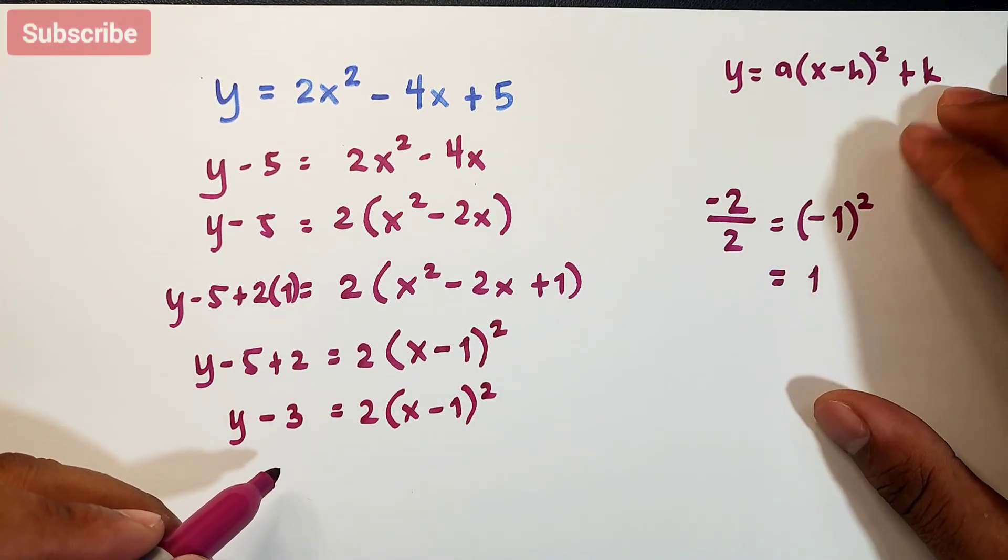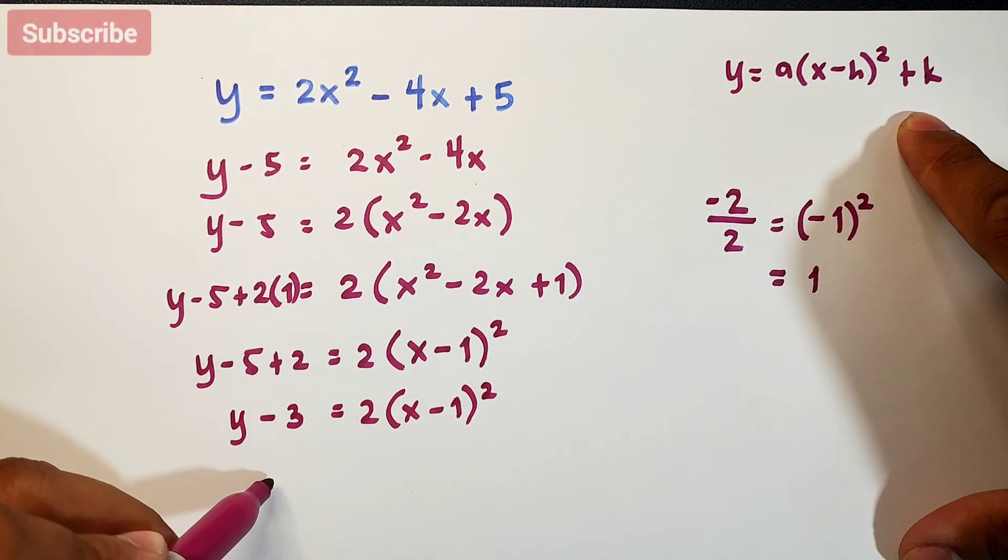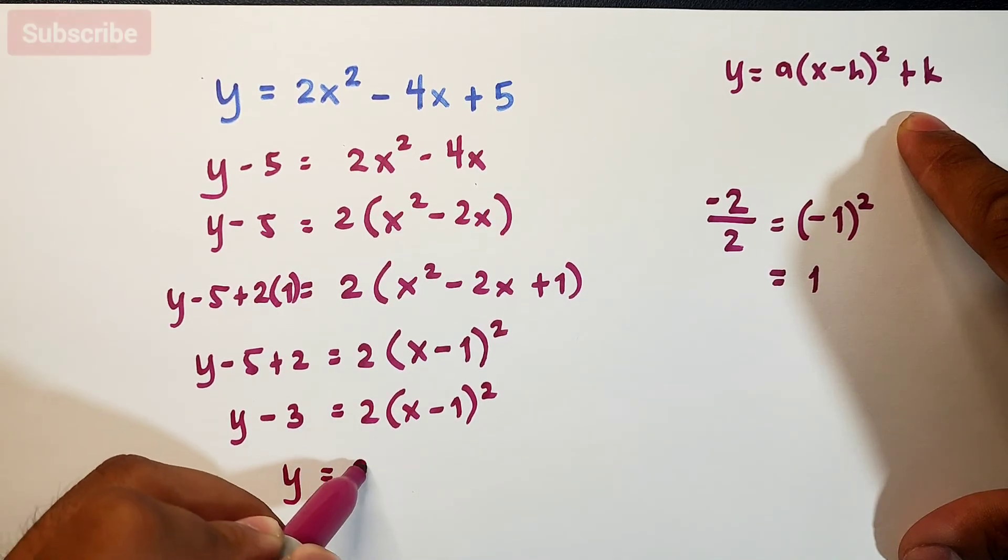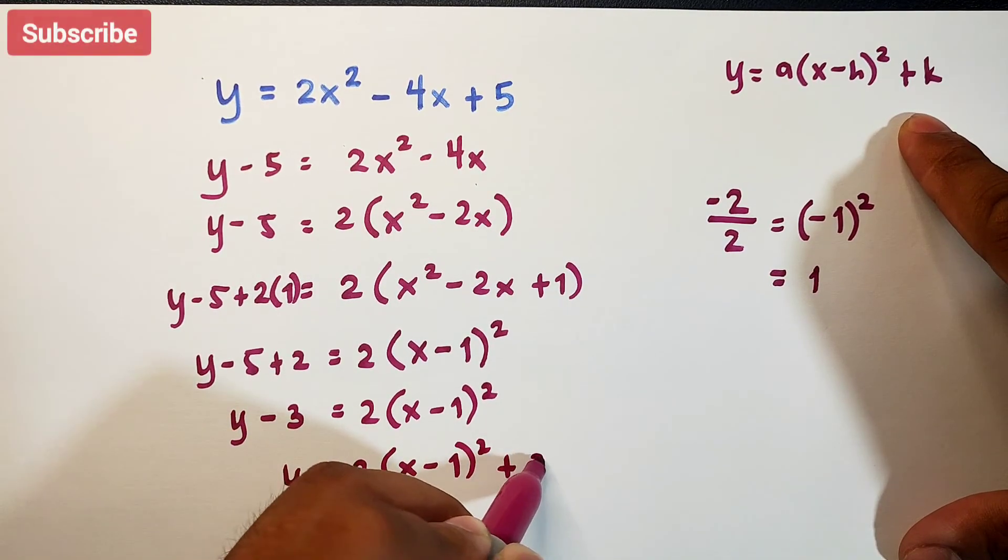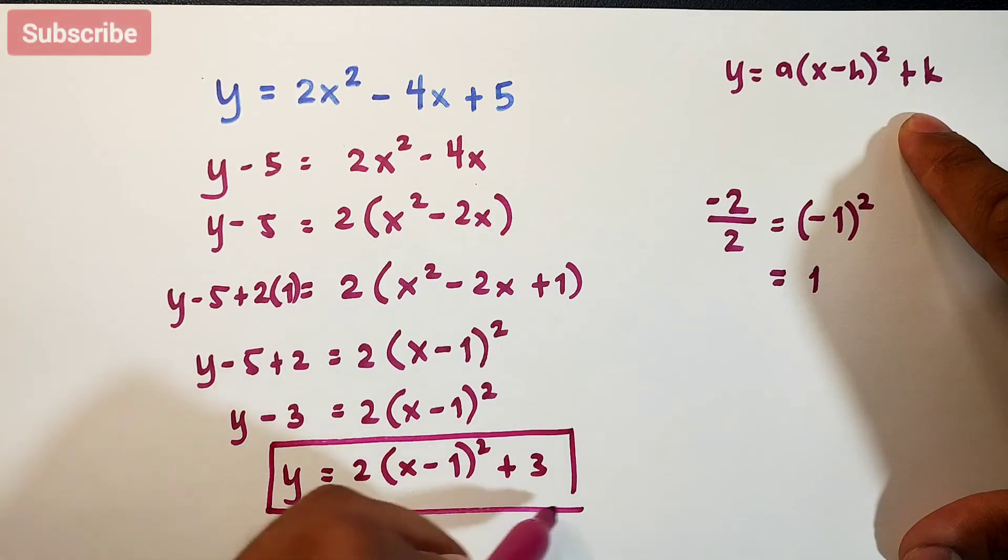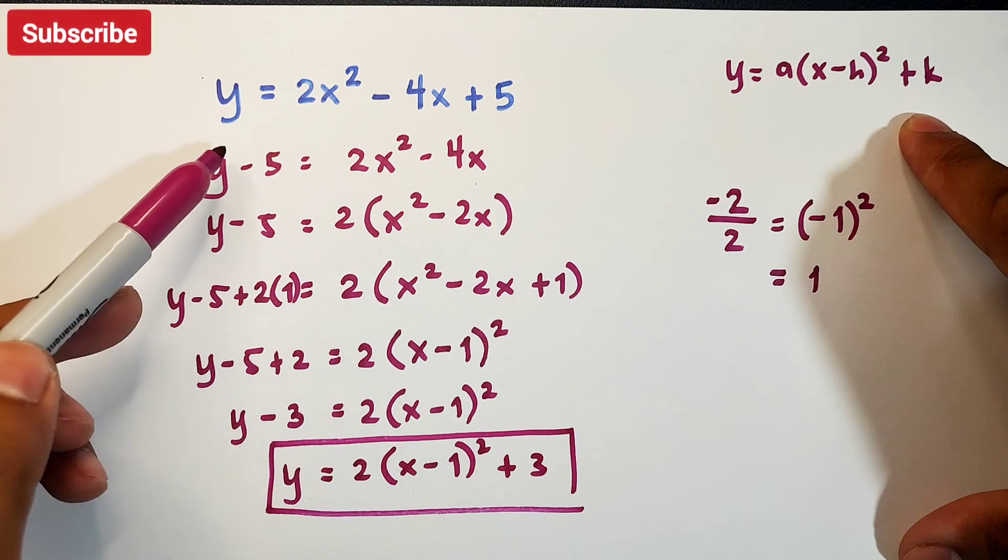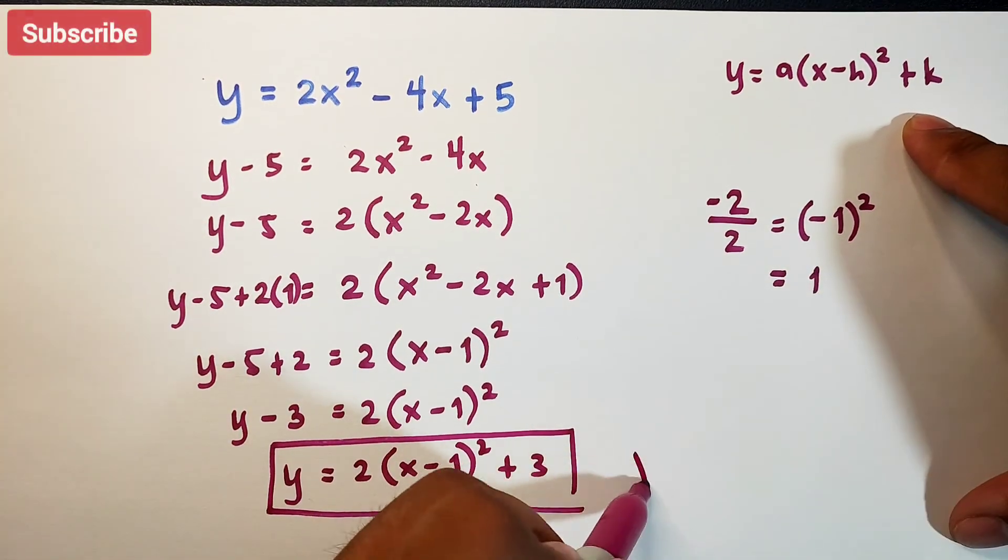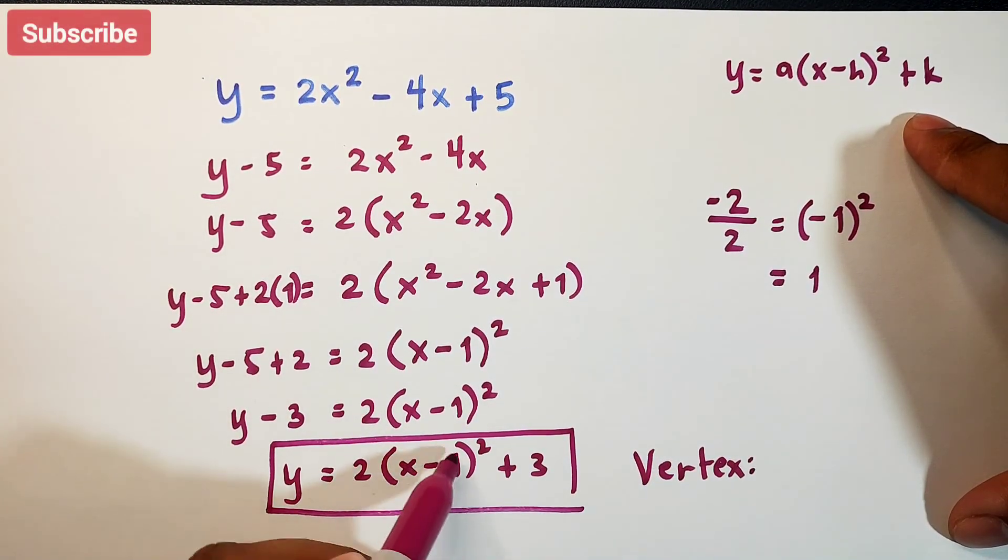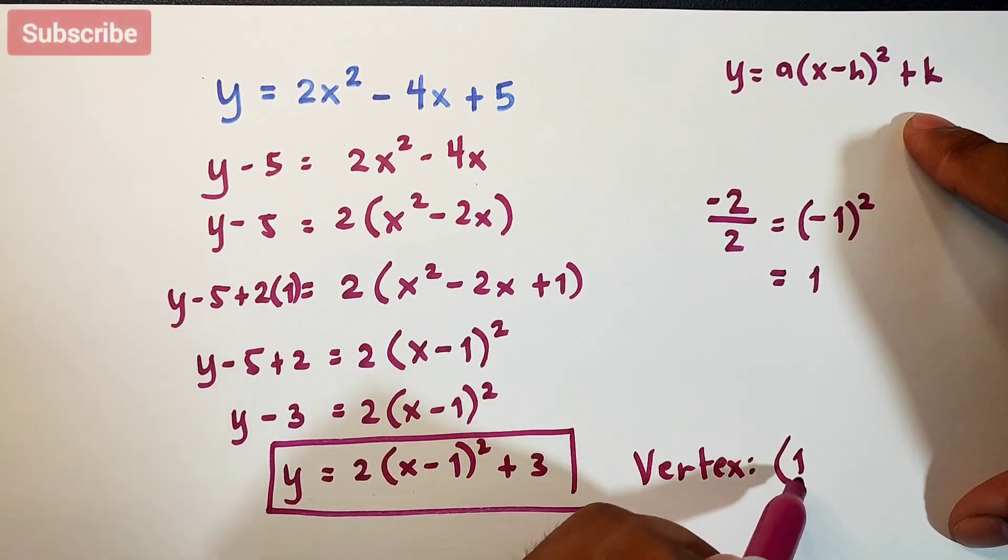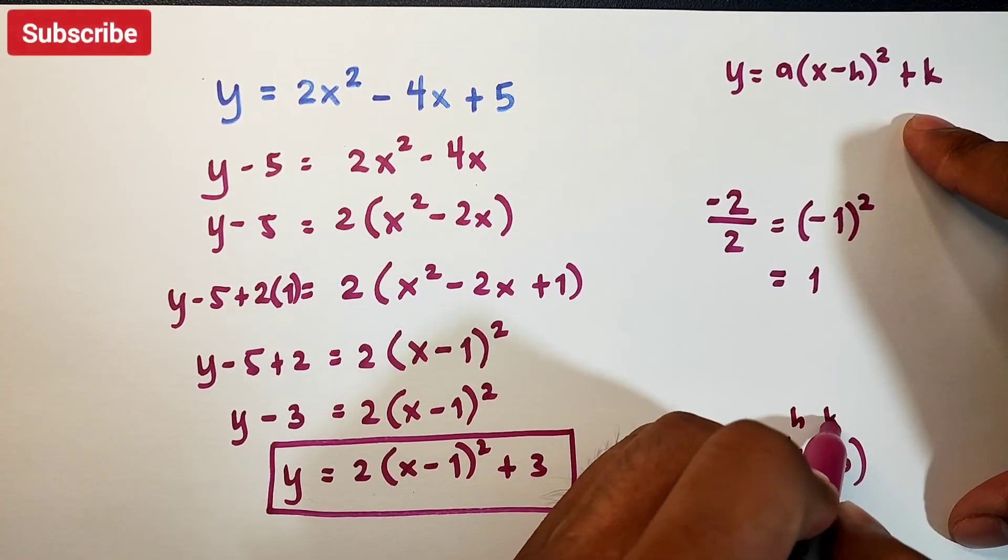We're not done because we need the plus k. This part is okay, we just need plus k. Transpose negative 3 to the other side. It becomes y equals 2 times x minus 1 squared plus 3. This is now the standard form. If you want to know your vertex, if this is negative 1, your h is positive 1, then plus 3, meaning this is 3. This is your h and this is your k.